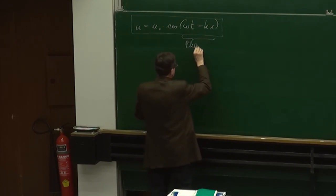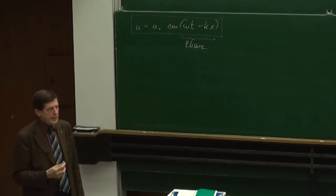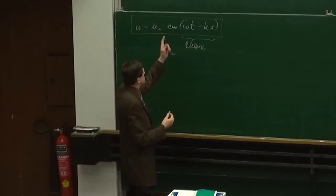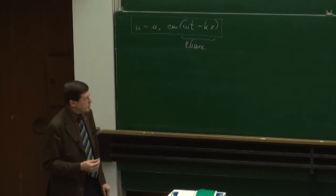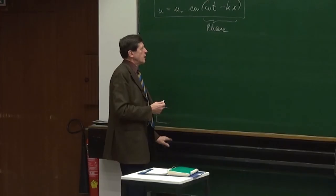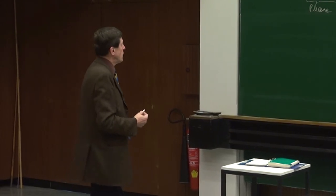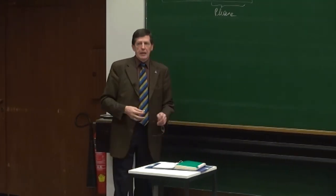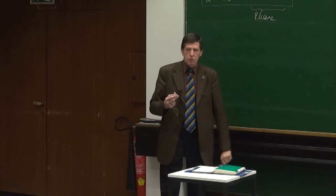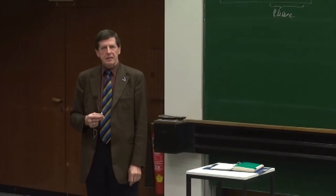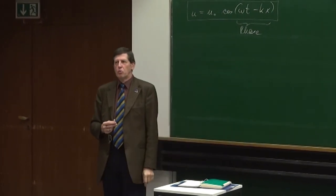Zunächst schauen wir uns noch einmal an, was man unter der Phase versteht, bei einer Schwingung sowie auch bei einer Welle. Die Phase ist das Argument der entsprechenden periodischen Funktion, entweder bei der komplexen E-Potenz oder bei dieser Cosinus-Funktion. Wenn zum Beispiel die Phase gleich Null ist zu einem bestimmten Zeitpunkt an einem bestimmten Ort, dann ist der Cosinus von Null gleich Eins. Das heißt, dann wird diese Auslenkung U den maximalen Wert U₀ annehmen.